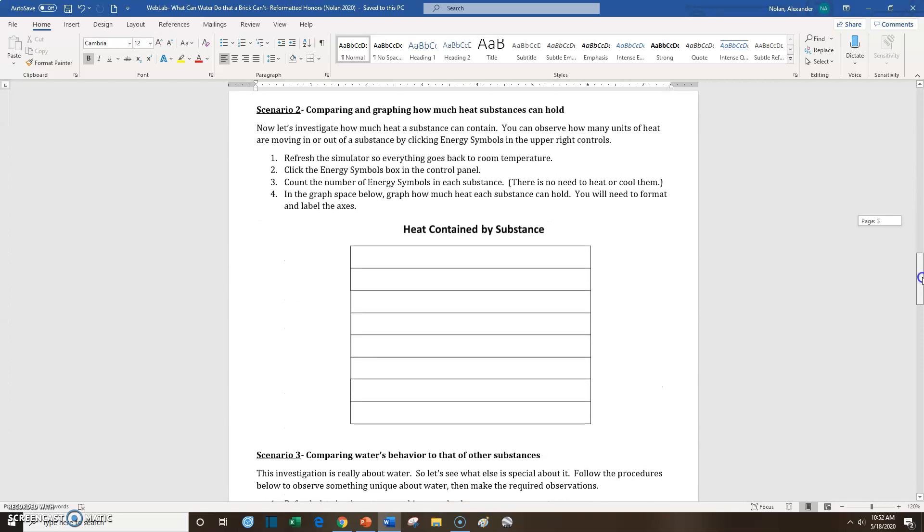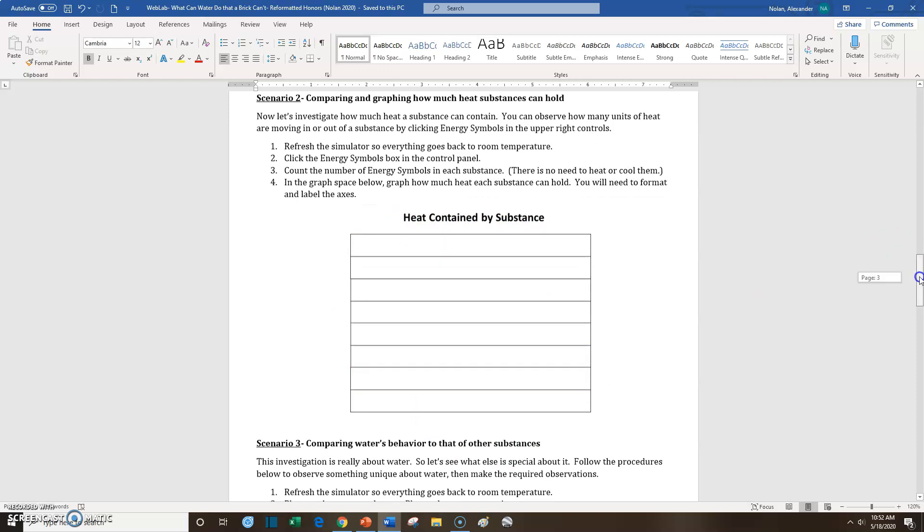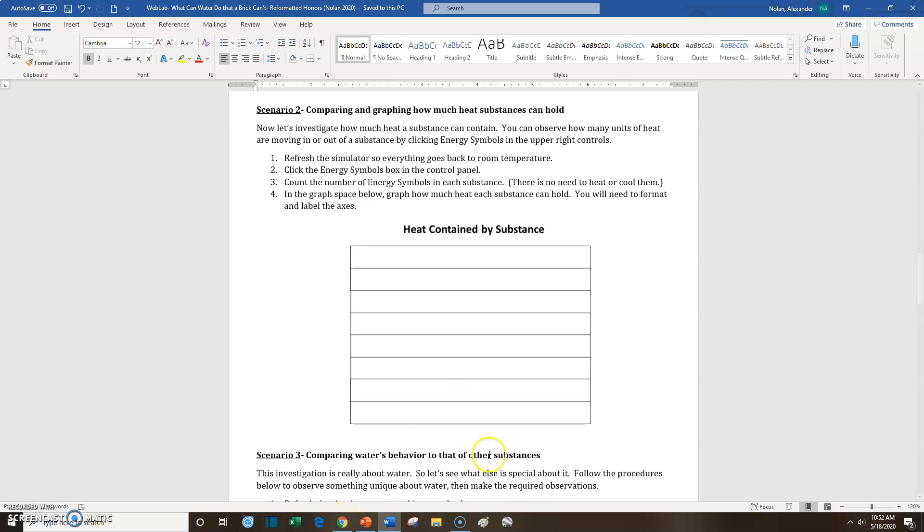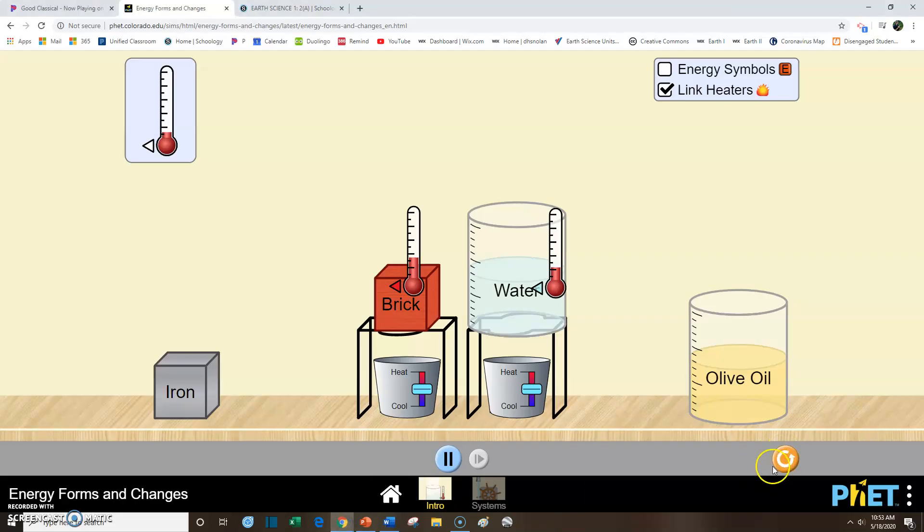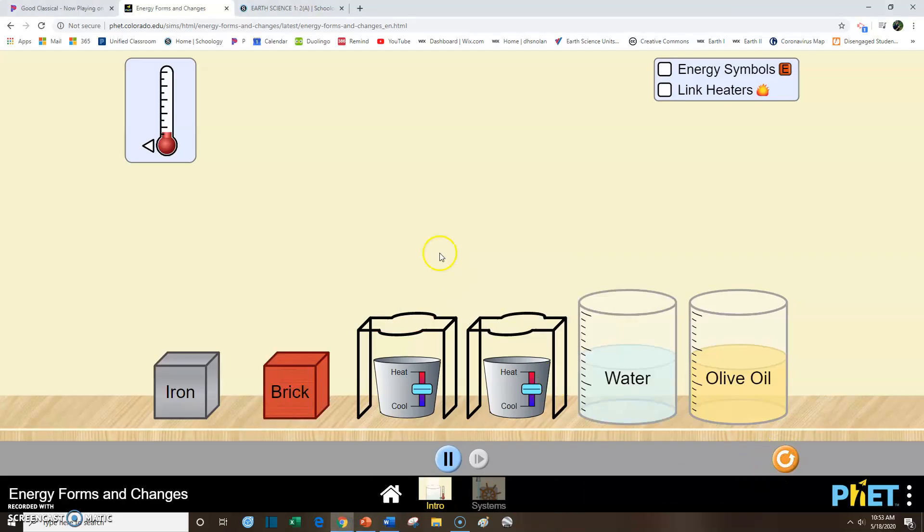So let's jump ahead to scenario two. Here you have to do a little bit of graphing. So I've given you this graph space and I've titled it Heat Contained by Substance. I want to show you something really neat. This is one of the cool things about this simulator. We're going to refresh so that everything goes back to room temperature. And I want to show you what we can do on this simulator. If we click right here where it says Energy Symbols, if you look what has appeared inside these substances, we see these little red E's.